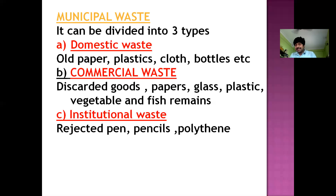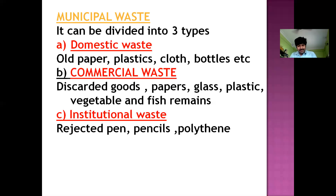Institutional waste means rejected pens — a rejected pen means a use-and-throw pen after its ink gets consumed, and we throw it. Pencil means the pencil whose lead gets broken so we cannot use it again and we throw it. That is the rejected pencil. And the last example is polythene.